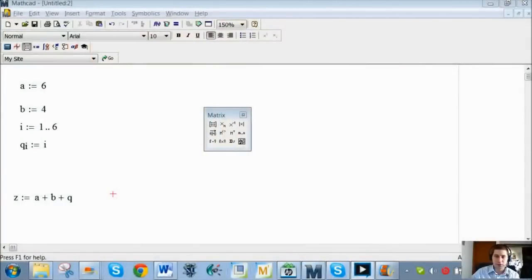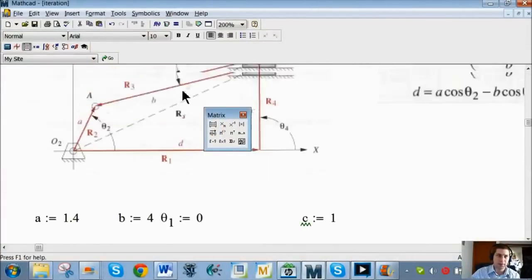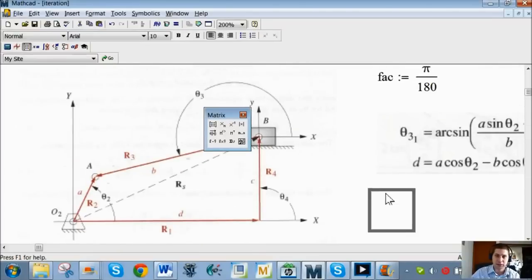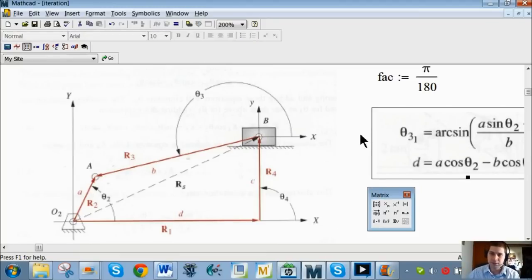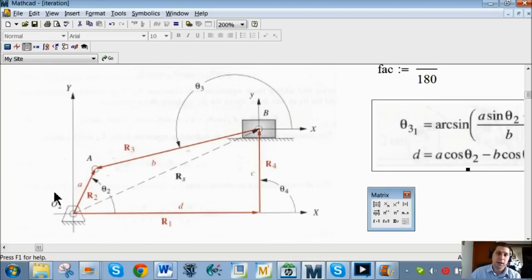So let's go ahead and hop over to Mathcad here and we'll take a look at just a simple mechanism. This is an offset slider crank. Now this tool you can use for any mechanism. The reason that I chose this one is just because simply there's only a few equations and they're short. And we really want the focus to be on what happens as theta 2 changes here. We can envision the angles between 0 and 360 degrees because it is a crank and that this box is going to slide back and forth so our d value is going to change and our theta 3 value will also change.